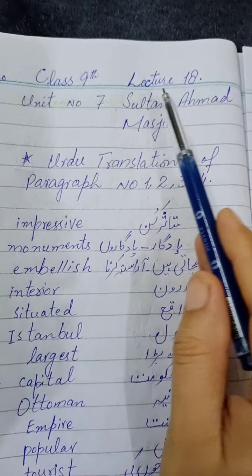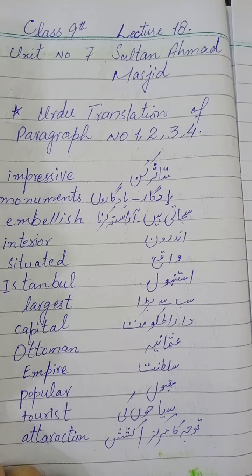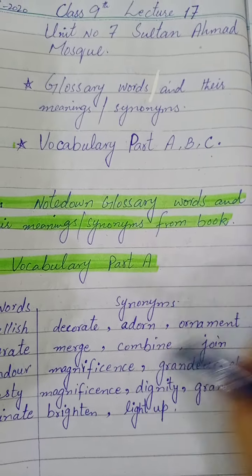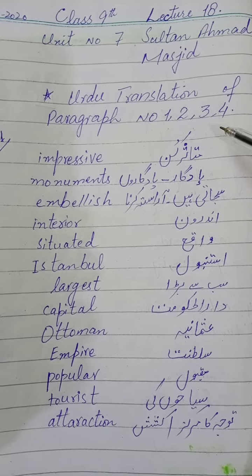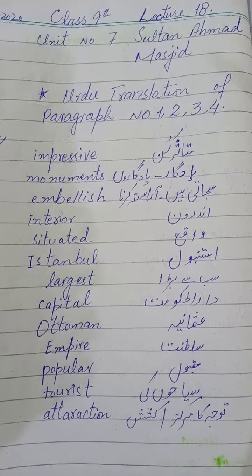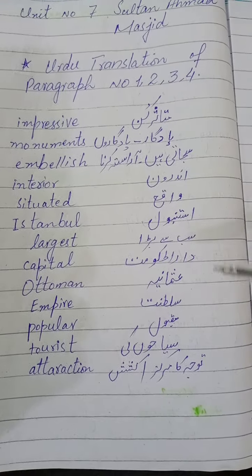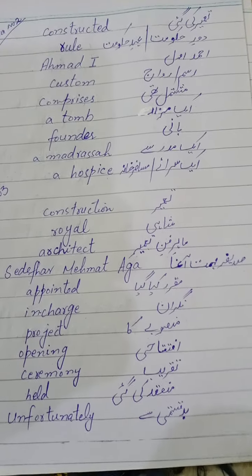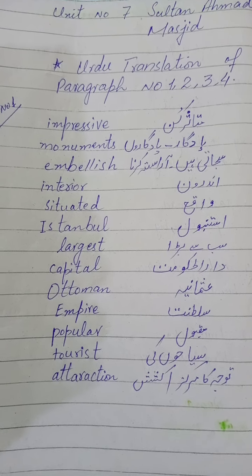Good morning 9th class, it's our lecture number 18 today. Hope you have done your previous day's work — that is unit number 7 vocabulary parts A, B, C, and D, that is abbreviations. So today we are going to start the Urdu translation of unit number 7, Sultan Ahmad Masjid. You are well aware of the vocabulary and know the meanings of the difficult words, so it would be easy to translate the text into Urdu. I have provided you the Urdu meanings of these difficult words. Practice the Urdu Imla and learn the Urdu translation of unit number 7. Let's start from paragraph number one.